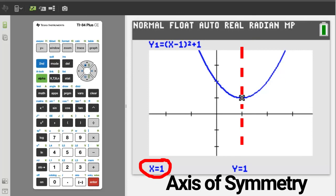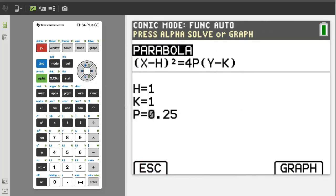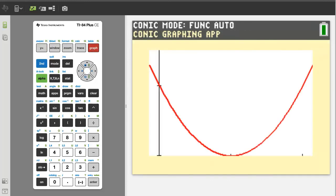Because this is a parabola that opens up or down to determine the axis of symmetry use the x value of the vertex, thus the axis of symmetry is x equals 1. Using this conics app the graph of parabola is not very good. Press the graph button. This is the graph we get.